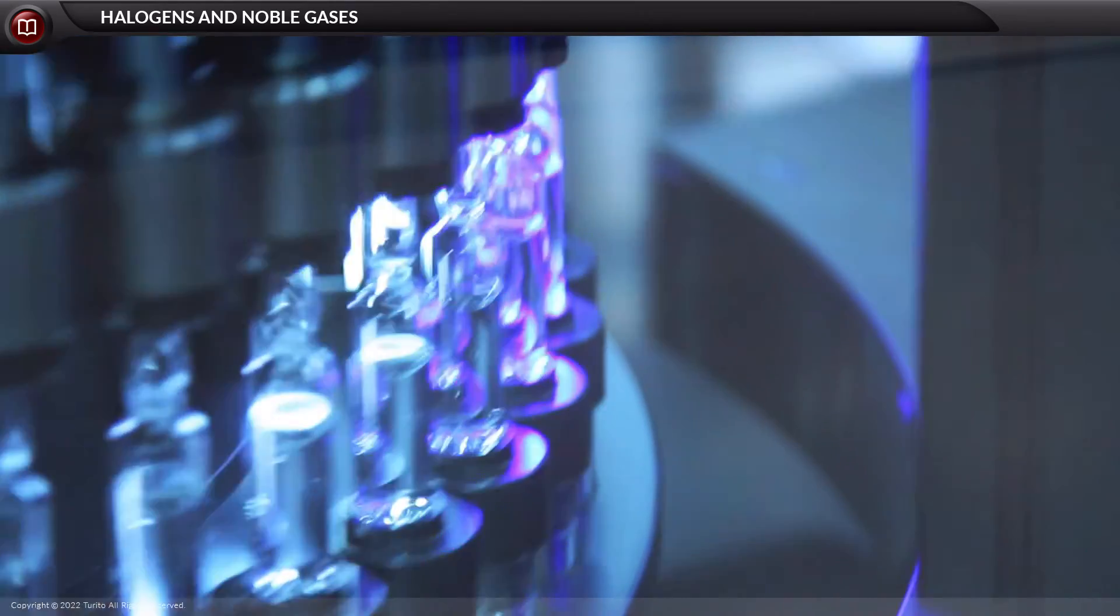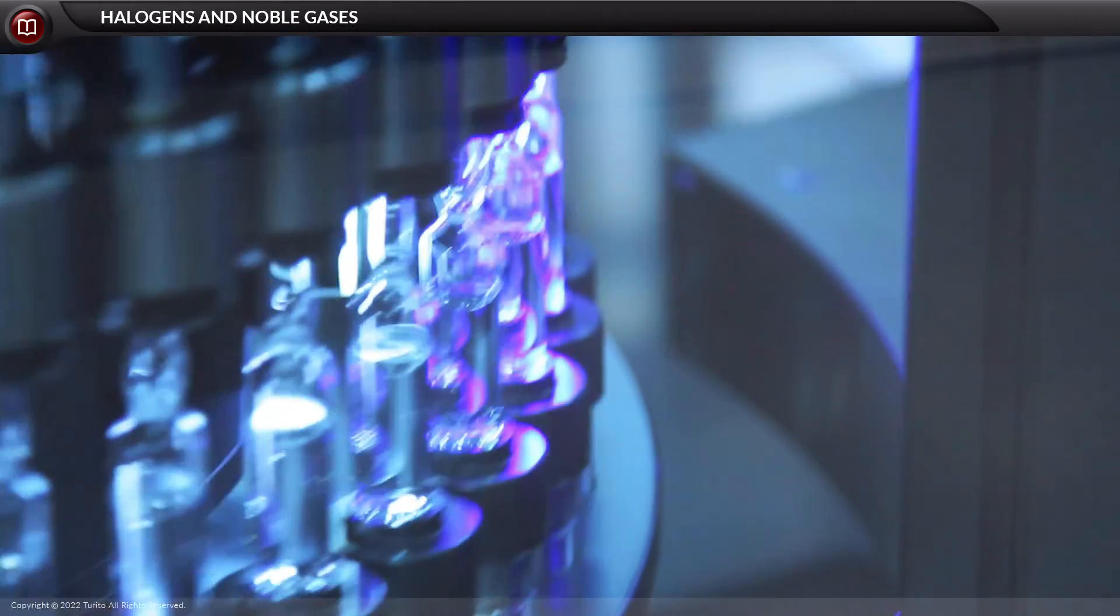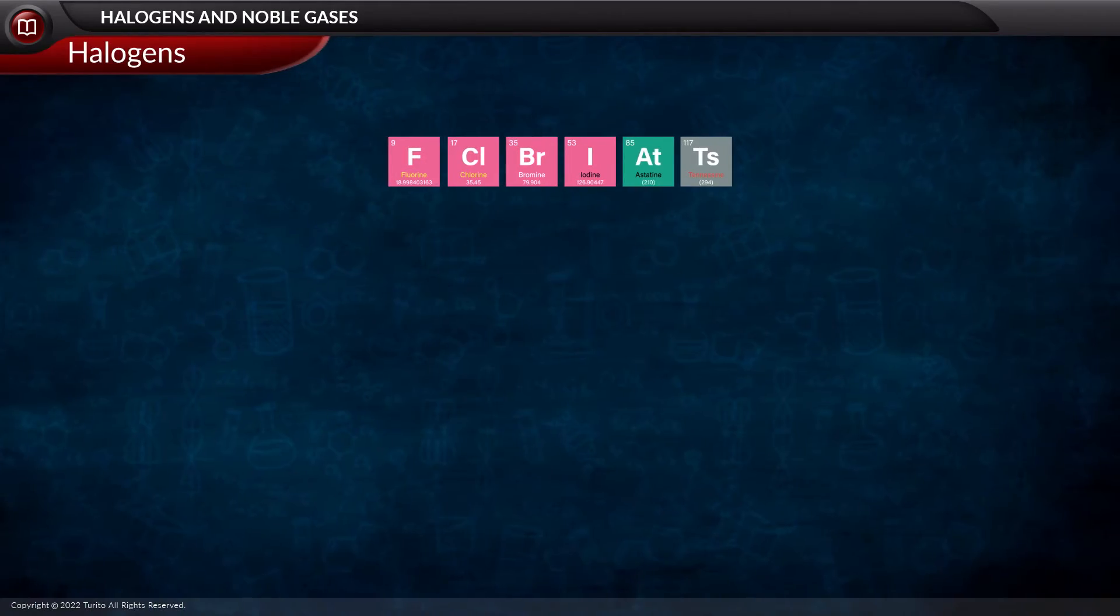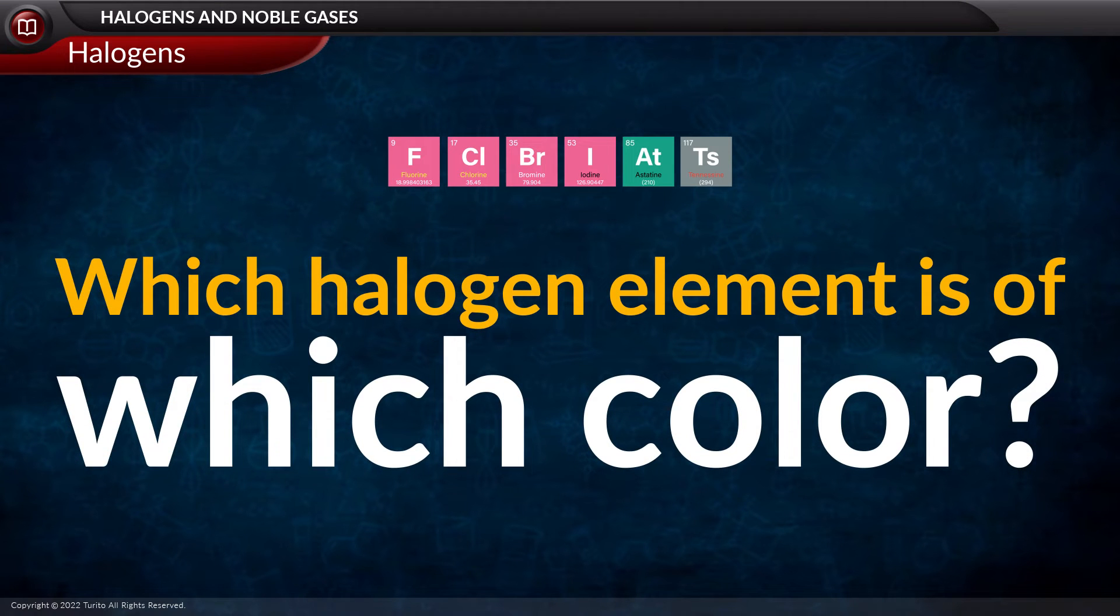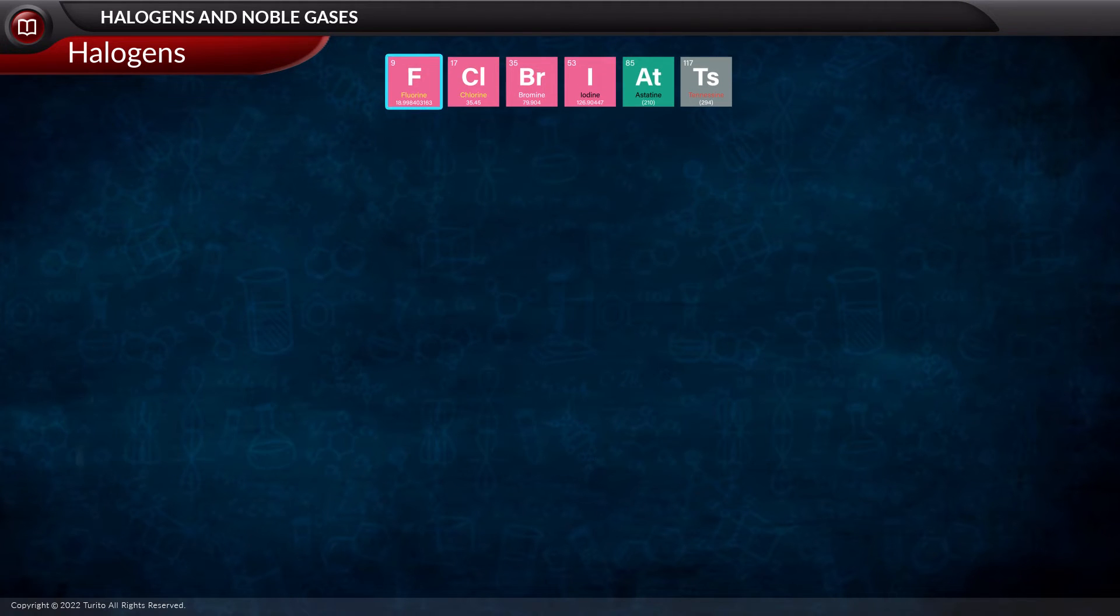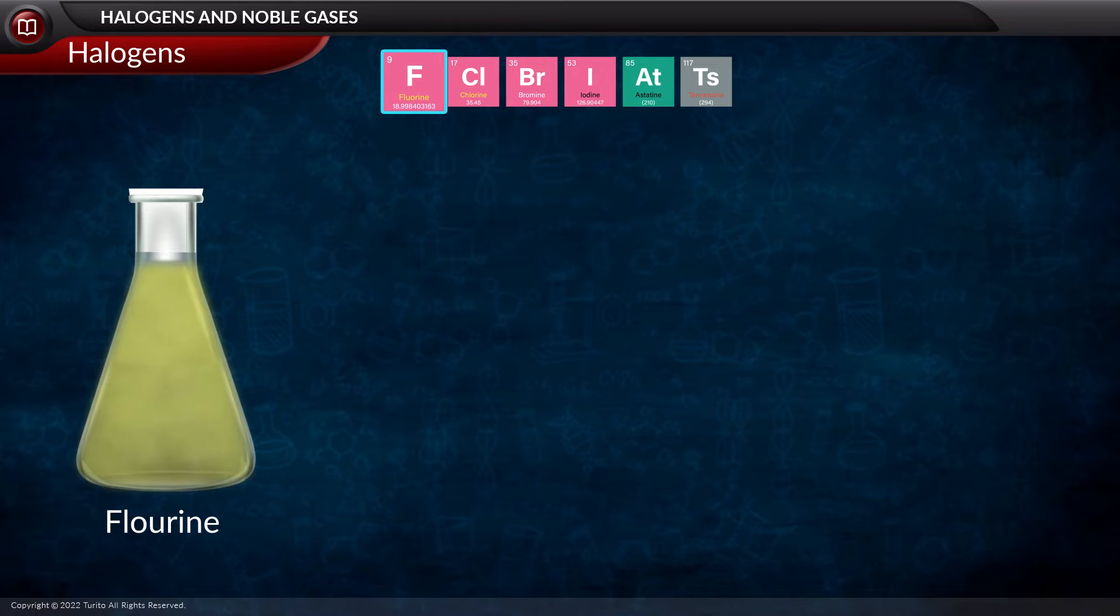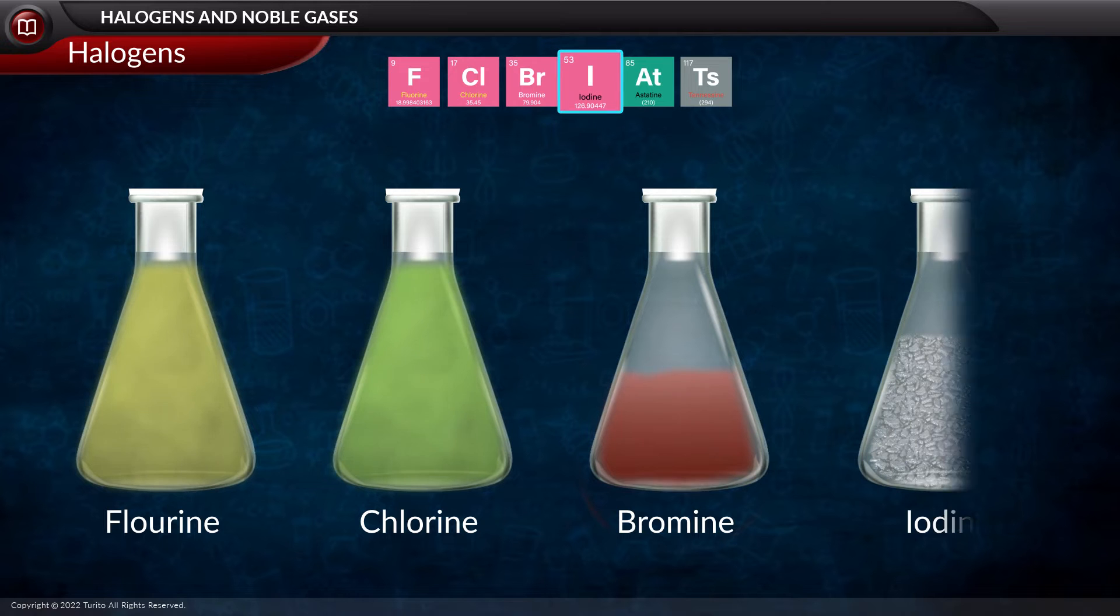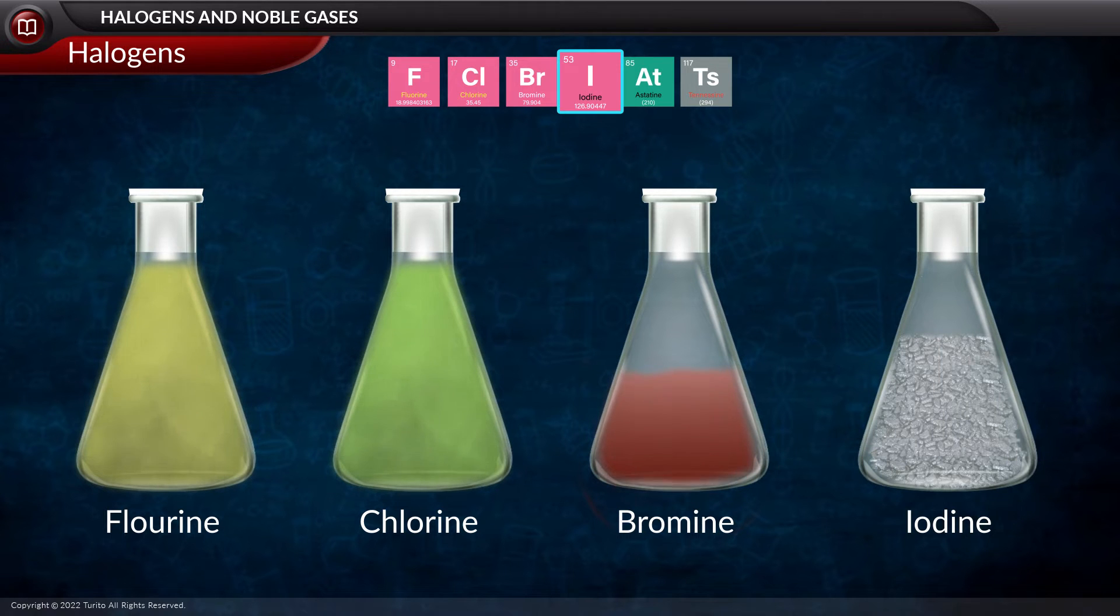They are colorful because they can absorb the light radiation of the frequency of the order of the UV visible region. Are you excited to know which halogen element is of which color? Fluorine is a very pale yellow, chlorine is yellow-green, bromine is a brownish liquid, and iodine is a purplish-gray solid.